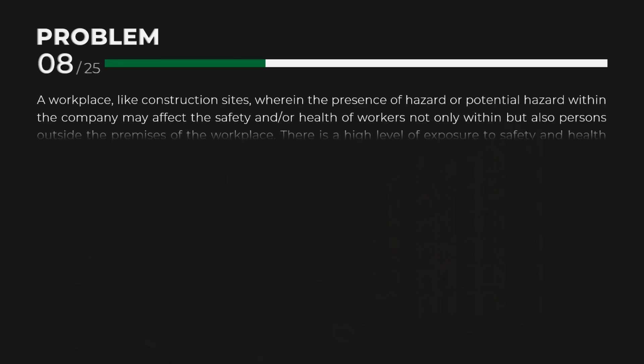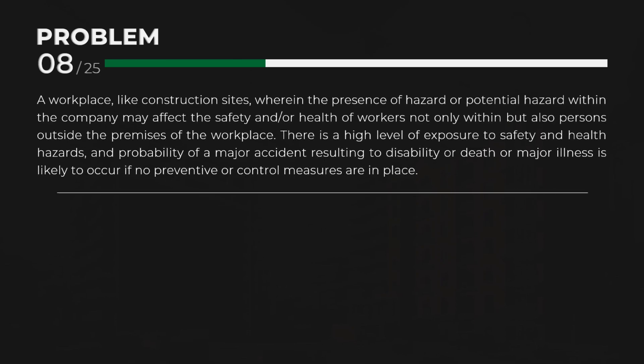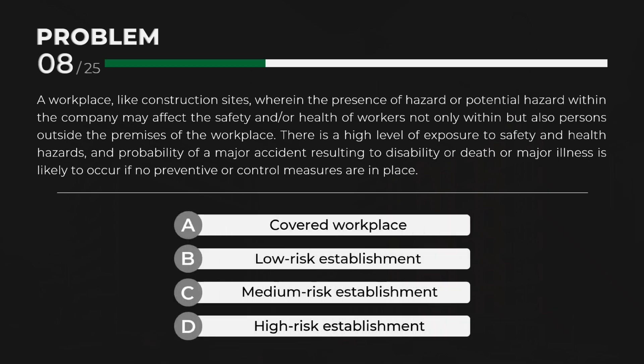A workplace, like construction sites, wherein the presence of hazard or potential hazard within the company may affect the safety and/or health of workers, not only within but also persons outside the premises. There is a high level of exposure to safety and health hazards, and probability of a major accident resulting in disability, death, or major illness is likely to occur if no preventive or control measures are in place. Answer: D. High risk establishment.